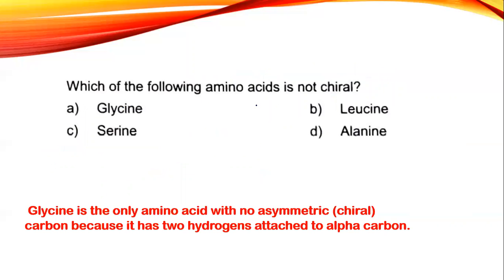Next question: which of the following amino acids is not chiral? Glycine is the answer. Glycine is the only amino acid with no asymmetric or chiral carbon because it has 2 hydrogens attached to the alpha carbon. All amino acids can be written as NH3 plus, C alpha, C' with CO group and O minus. This is the basic structure of an amino acid. In the C alpha, glycine has 2 hydrogens. In all other cases, there will be other groups attached to the alpha carbon. Therefore it will be asymmetric or chiral. But only in glycine, it is not chiral. So the answer is option A, glycine.